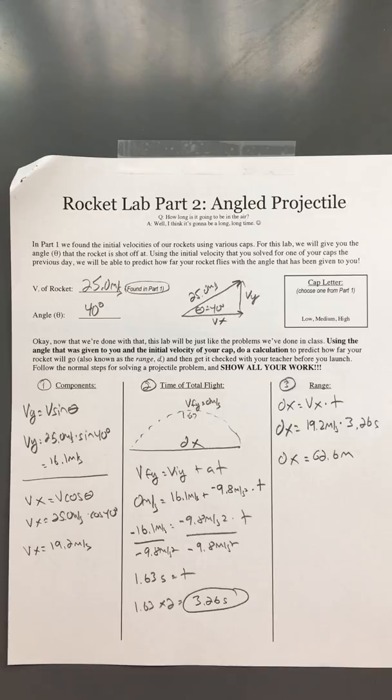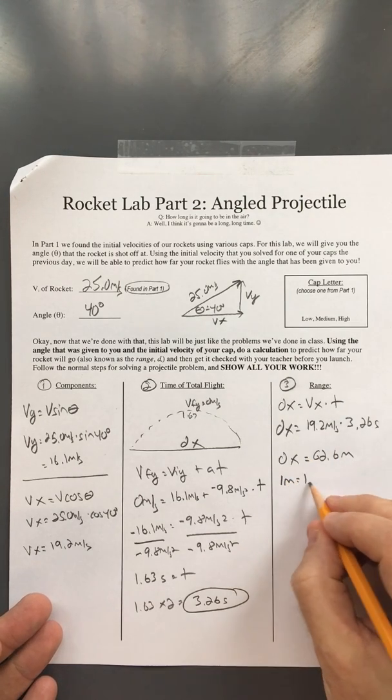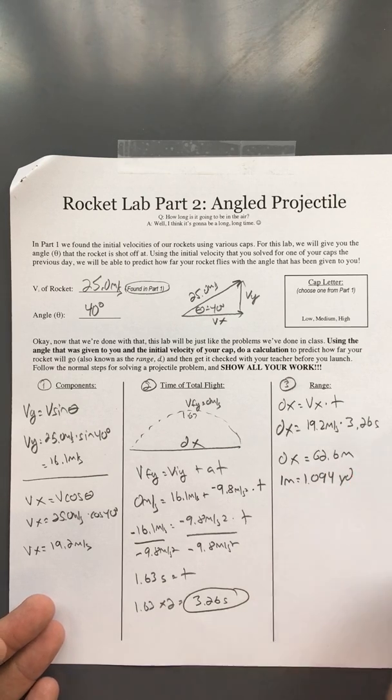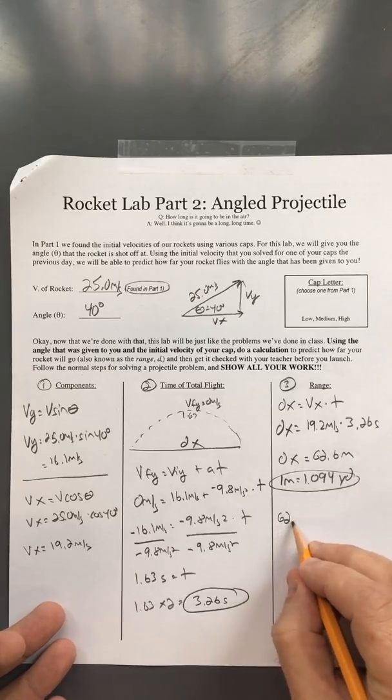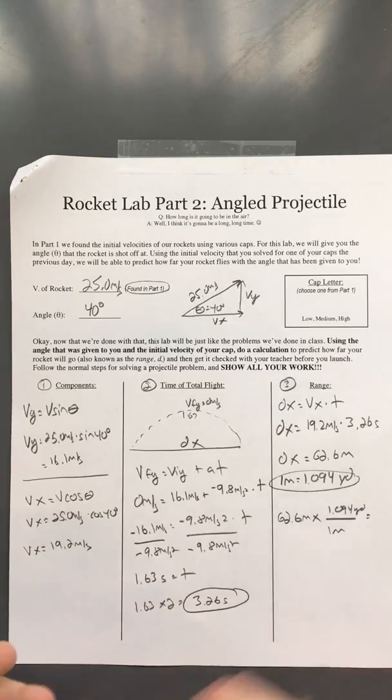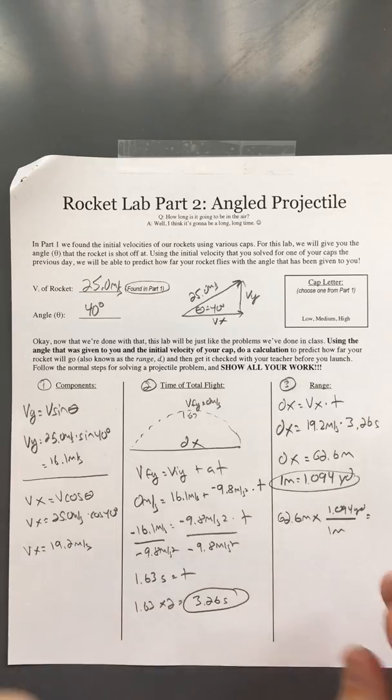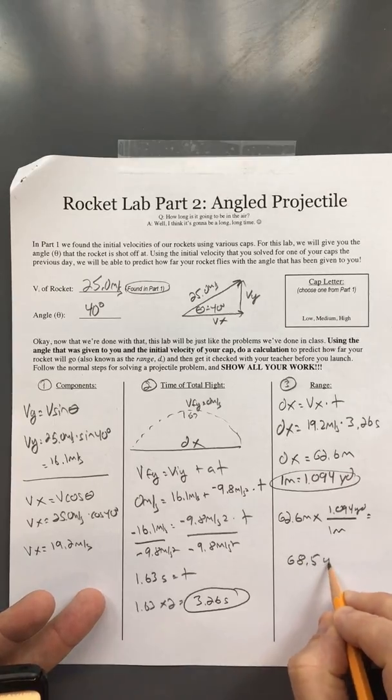Now we're going to take this out to the football field. We'll need to convert meters to yards since the football field is measured in yards. One meter equals 1.094 yards. Using that conversion with our dx, we do factor-label: 62.6 meters times 1.094 yards per meter equals approximately 68.5 yards.